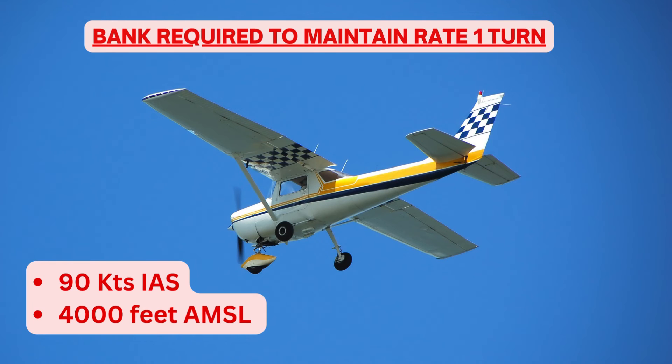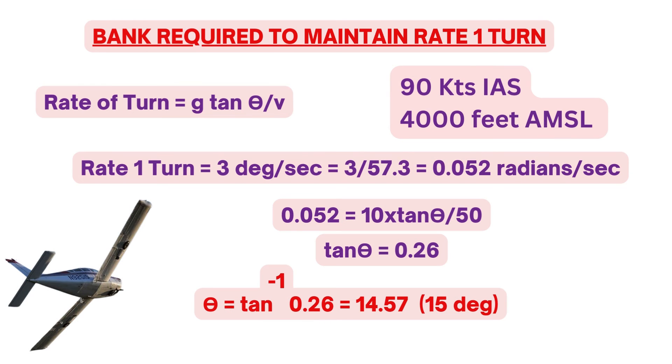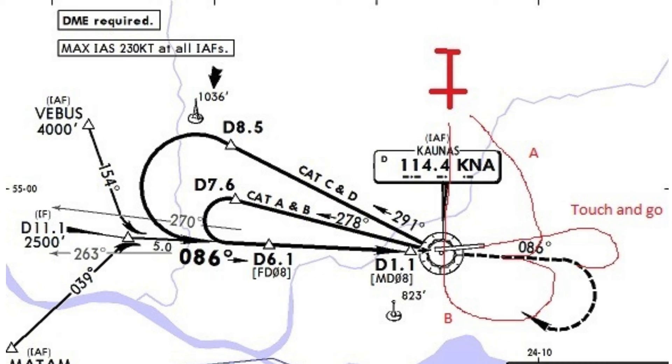Another example we need to work out is the bank required to maintain rate 1 turn. Rate 1 means 3 degree per second, which is equivalent to 0.52 radians per second. And now let's put the values in the formula and we get the answer rounded off to 15 degree. So 15 degree of bank at 90 knots of indicated speed at 4,000 feet above mean sea level will give you rate 1 turn. So remember bank required to maintain rate 1 is for a given speed i.e. TAS and you will require more bank to maintain rate 1 if your speed increases or if you fly at higher altitude since at higher altitude for the same IAS the TAS will be higher. Now you can correlate that why different outbound radials are given in the approach plate for different category of aeroplanes. This is to cater for larger radius of turn required to turn from outbound to inbound course for aeroplanes flying at higher speeds.